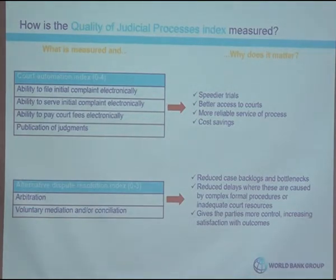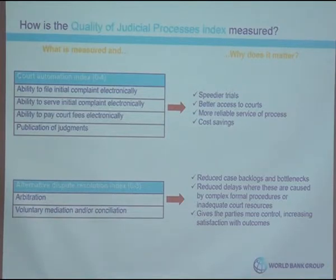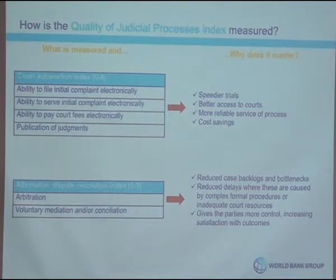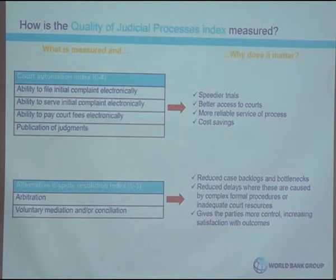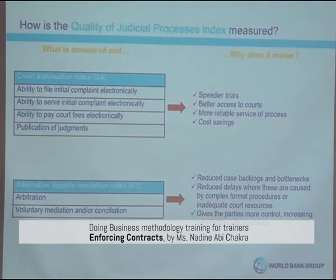The third section is court automation, examining whether the initial complaint can be filed online, if the defendant can be served electronically, if court fees can be paid electronically, and if judgments are published — including judgments of the first instance court and courts of appeal and cassation. The fourth and final section covers the alternative dispute resolution index, examining whether a law encompasses arbitration and the framework for voluntary mediation and/or conciliation.